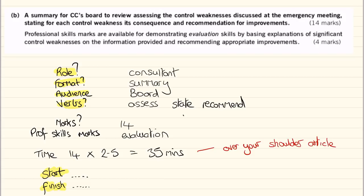Let's take a more detailed look at question 3B. We are asked to produce a summary for the board to review that assesses control weaknesses discussed at the meeting, stating for each weakness its consequence and recommending improvements — 14 marks, with professional skills marks for evaluation skills. Using the same six steps: who are we? A consultant. What is the format? A summary. Who's the audience? The board. What verbs? Three verbs: assess, state, and recommend — make sure we address each of them. How many marks? 14. Professional skills marks are for evaluation. Also very aware of time: 14 marks gives me 35 minutes. I write down start and finish time.